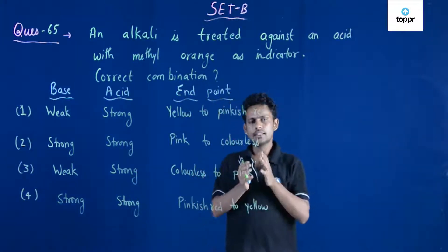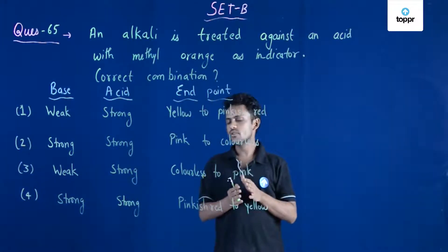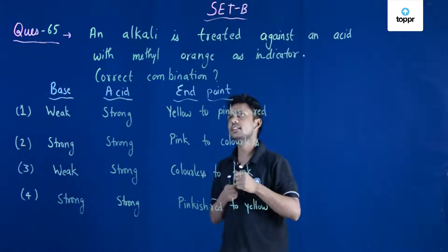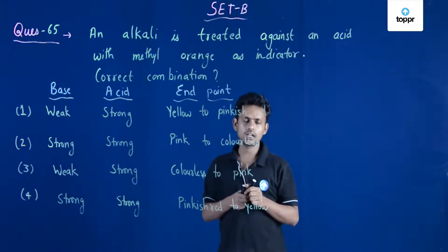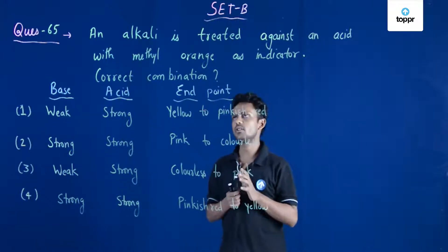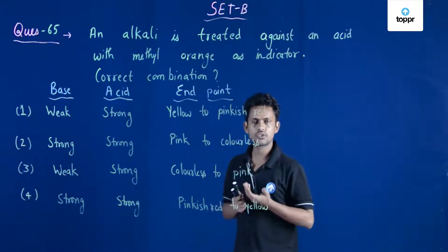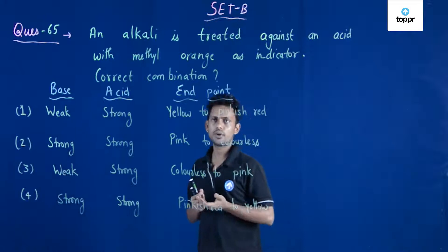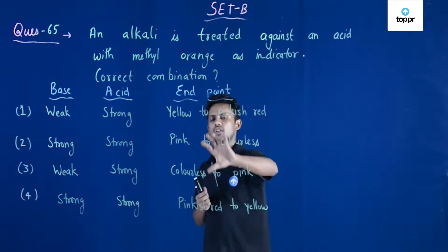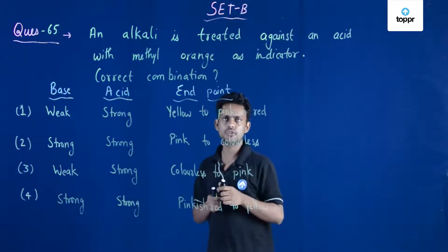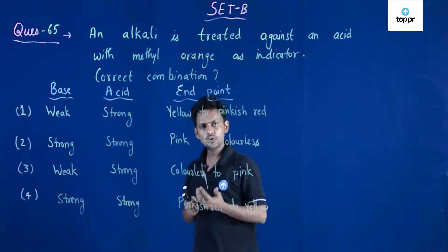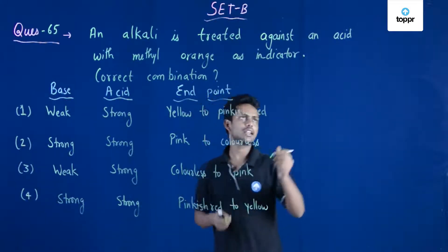This is a very simple question. Methyl orange is the indicator and they have not told us whether the acid or the base is strong or weak. They have only talked about the end point, so you need to know what methyl orange indicator is.